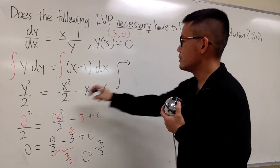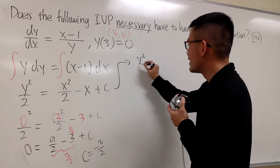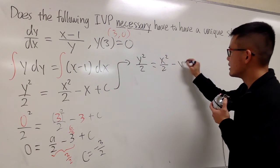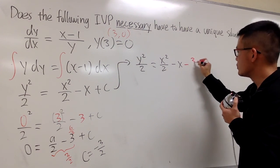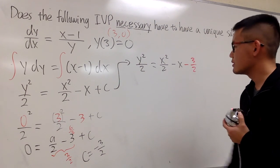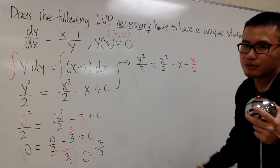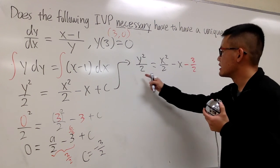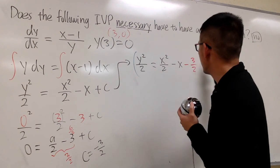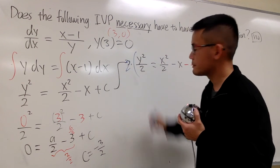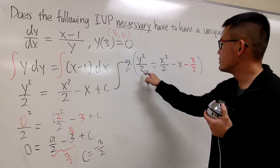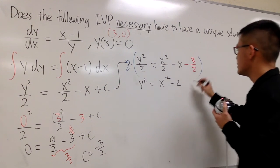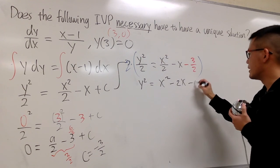We pretty much have the solution right here. y squared over 2 equals x squared over 2 minus x minus 3 over 2. Now let's try to isolate y — multiply everything by 2. So y squared equals x squared minus 2x minus 3.